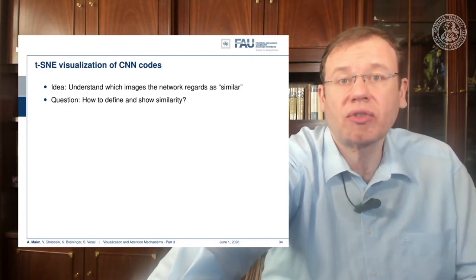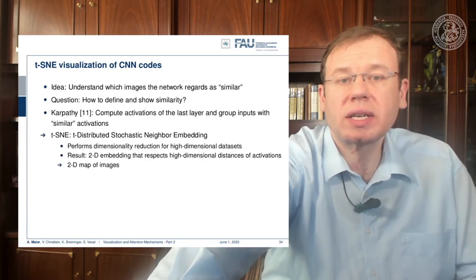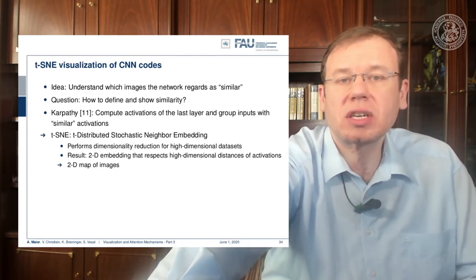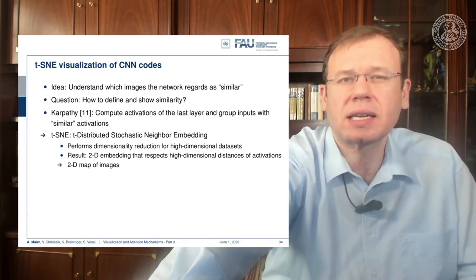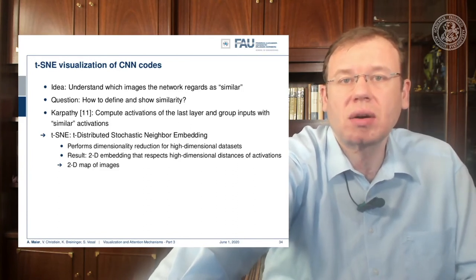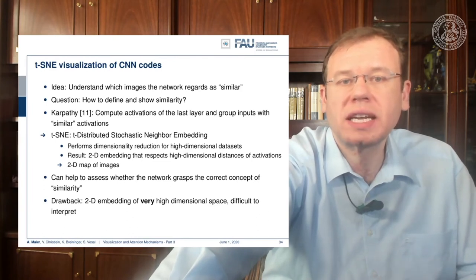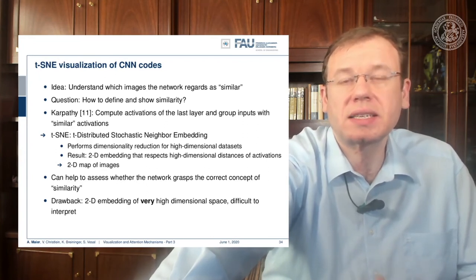You can also use clustering of inputs to visualize how similar different inputs are for a specific deep network. This is the t-SNE — t-Stochastic Neighborhood Embedding — visualization technique. The idea is that you compute the activations of the last layer and group the inputs with respect to their similarity in the last layer activation. You essentially perform dimensionality reduction of the last layer activations, since these encode the feature representation of the trained network. You then produce a 2D map that allows you to see what your network thinks are similar inputs.